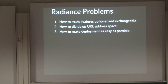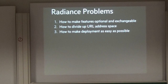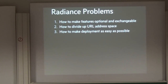Doing this, I encountered a few problems. How do I actually make these features optional and exchangeable? How do I divide up the URL namespace — when you open up a website, it has to decide which content to serve and which applications to address? How do these applications communicate with each other? And finally, how is deployment going to work?